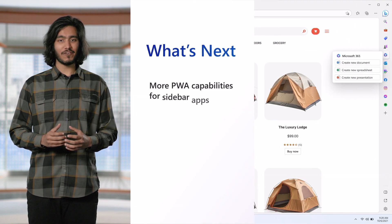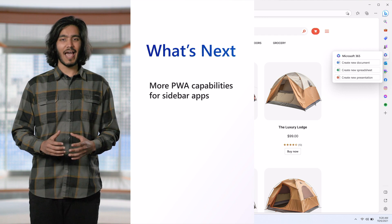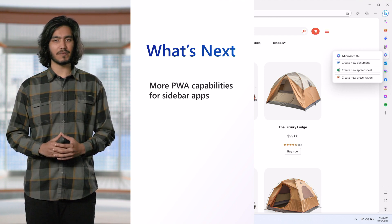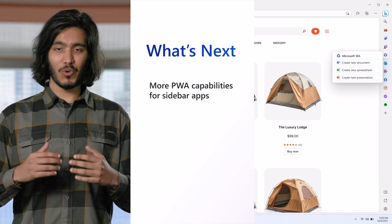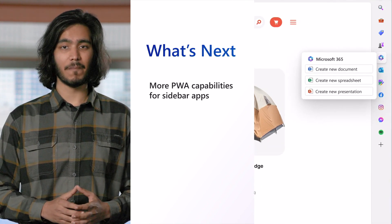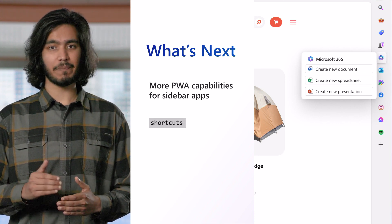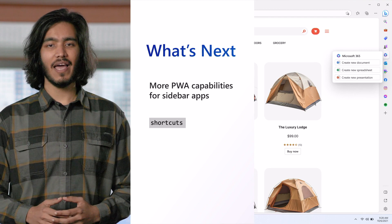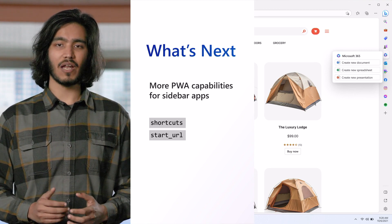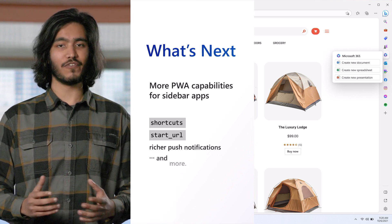The sidebar is a new interface that we expect will empower you to build for the web in new ways, and we envision these apps being able to do much more in the coming months. For instance, we're investigating ways to map existing PWA features to the sidebar, including app shortcuts that allow you to quick-launch to a specific page or action within your app, a dedicated start URL property that will allow you to define a custom landing page for the sidebar, and a richer notification system.